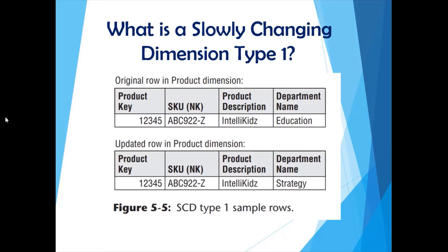Slowly changing dimension type 1. Consider a product dimension with a product key, product SKU, product description, and department name. In this example, the product description is IntelliKits and the department name is Education. Now, if we update the department name from Education to Strategy, in a type 1 dimension table we go to the original record and overwrite it with the new value. This is your type 1 slowly changing dimension — updating or overwriting the same record.